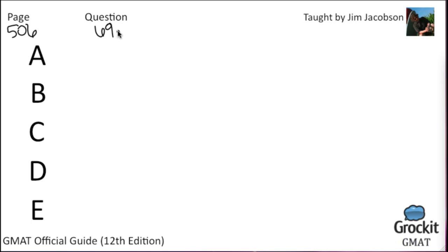Therefore, for most feed corn farmers, switching to genetically modified seed would be unlikely to increase profits. Which of the following would it be most useful to know in order to evaluate the argument? As we've seen repeatedly, 'which of the following would be useful to know' is really a weakening question in disguise. We need something that would say the switch might save money after all.